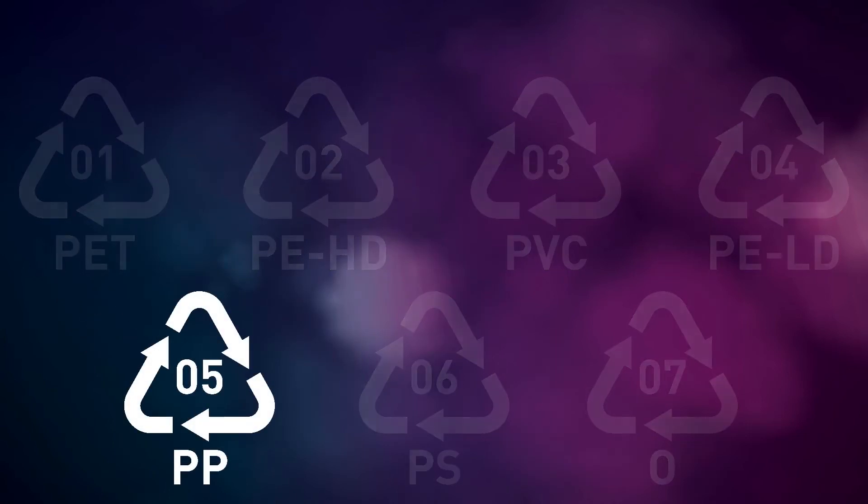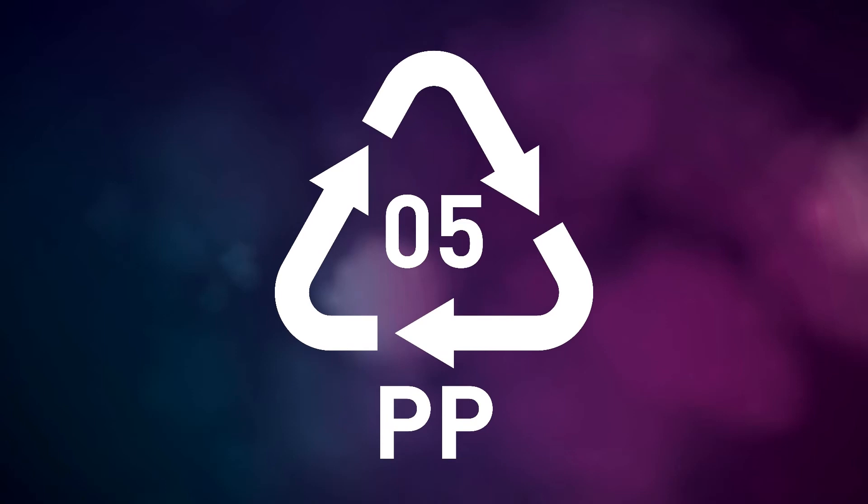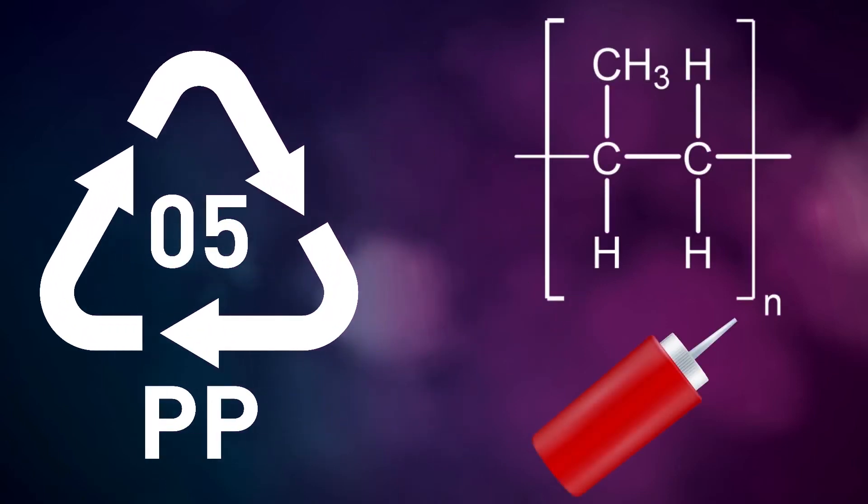Plastic five is polypropylene with the monomeric unit propylene. This is a plastic that is strong and has a high melting point and is incredibly resistant to chemical attack. As such, it is used in products that need to be sterilized regularly in environments for food preparation, laboratory equipment, and medical devices.